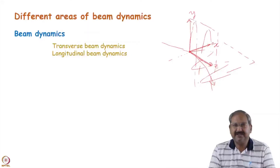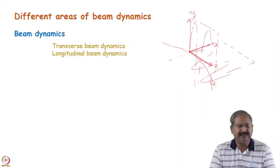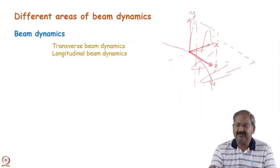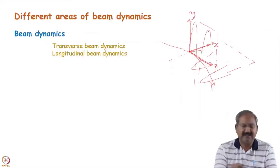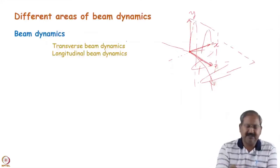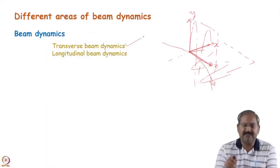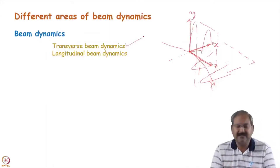Instead of talking about z and z-prime, we will take two new variables, which we will see shortly. The dynamics governing betatron motion is known as transverse beam dynamics.